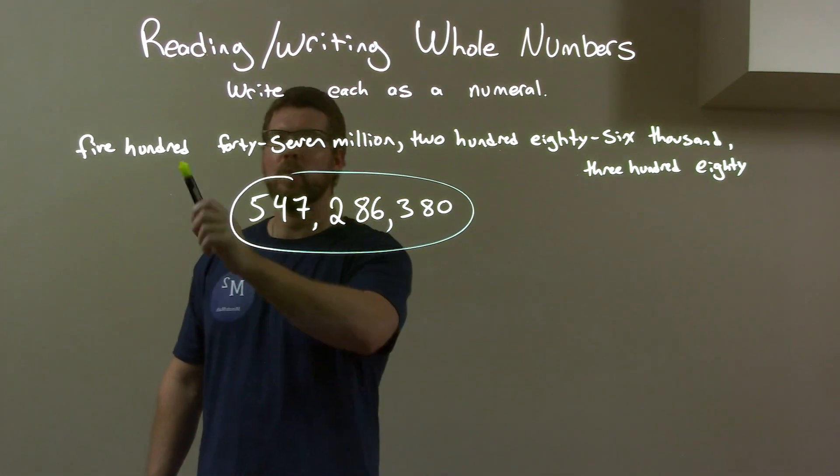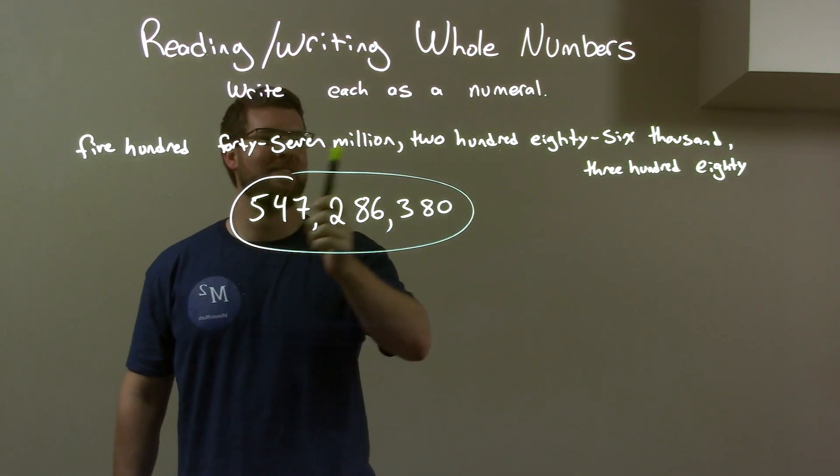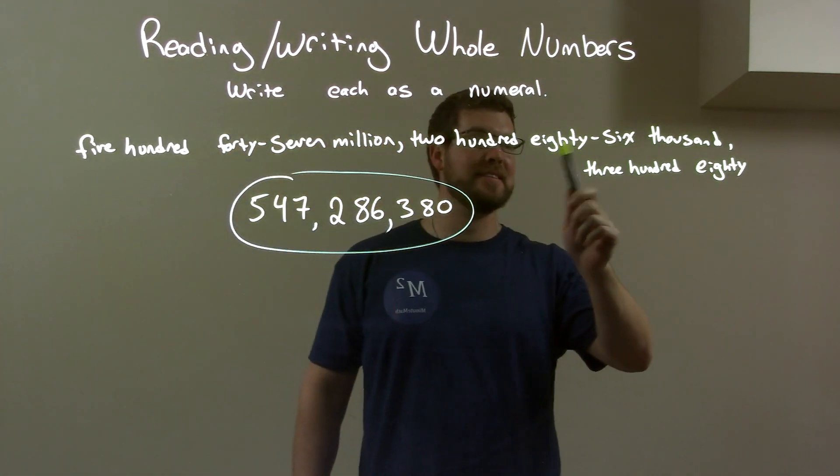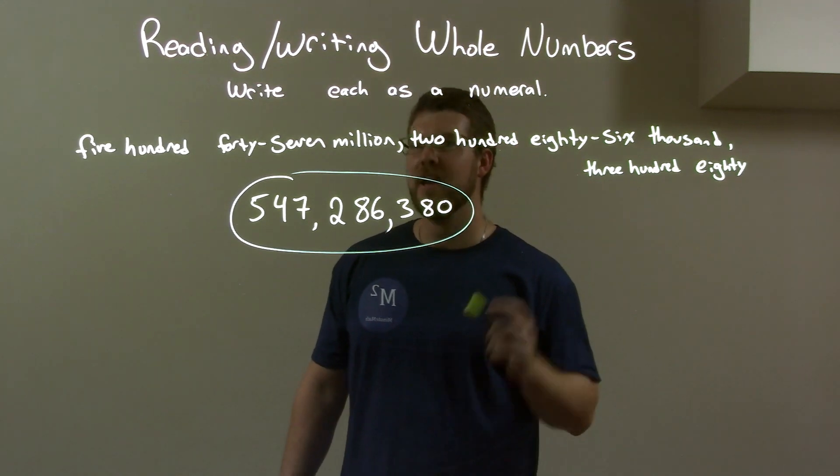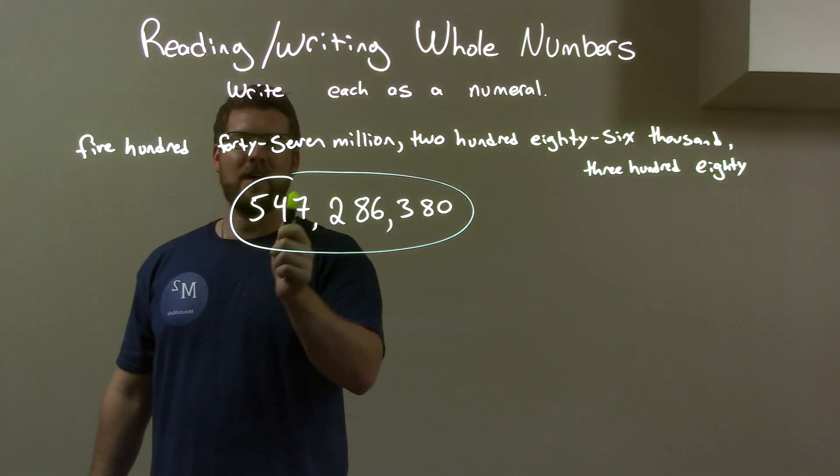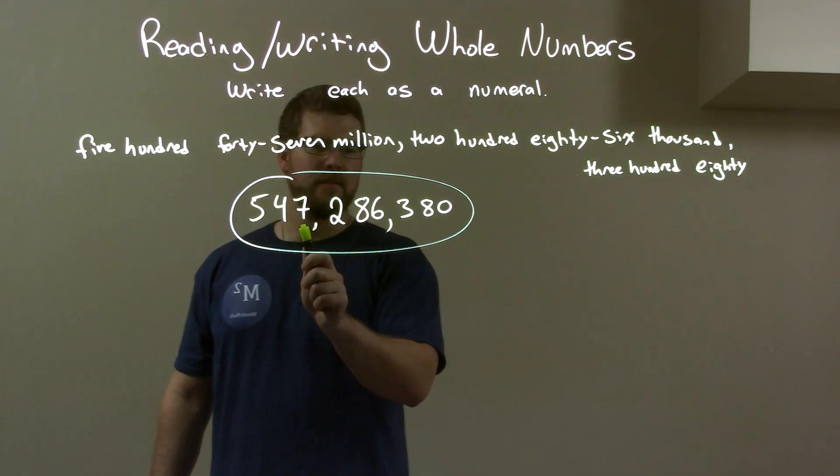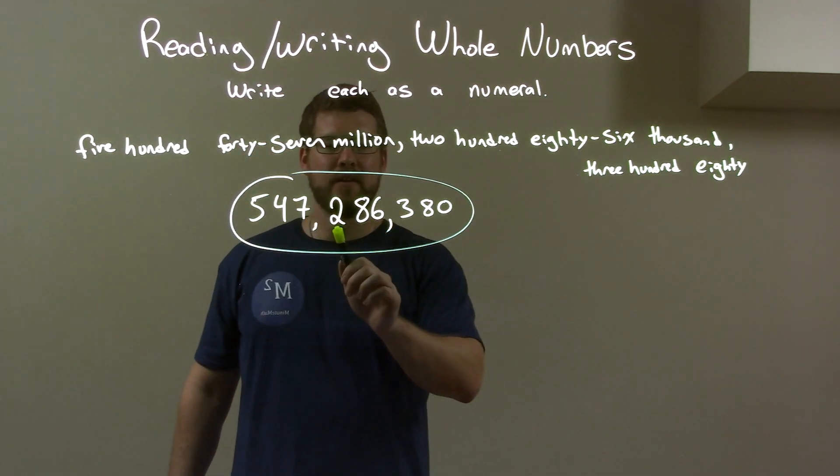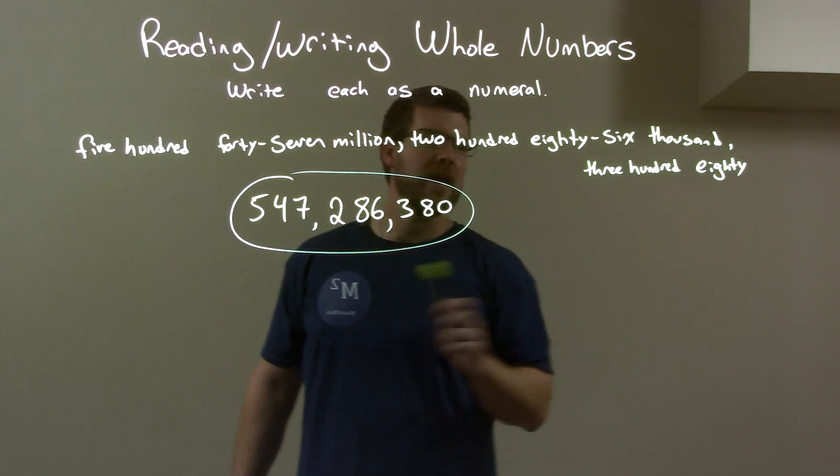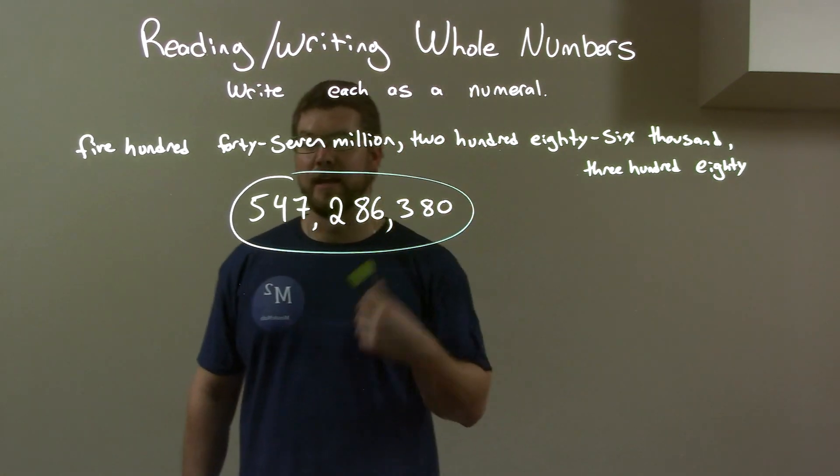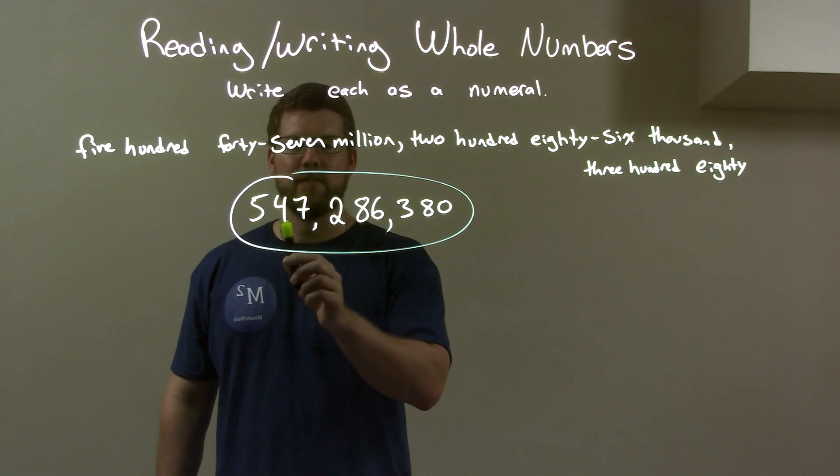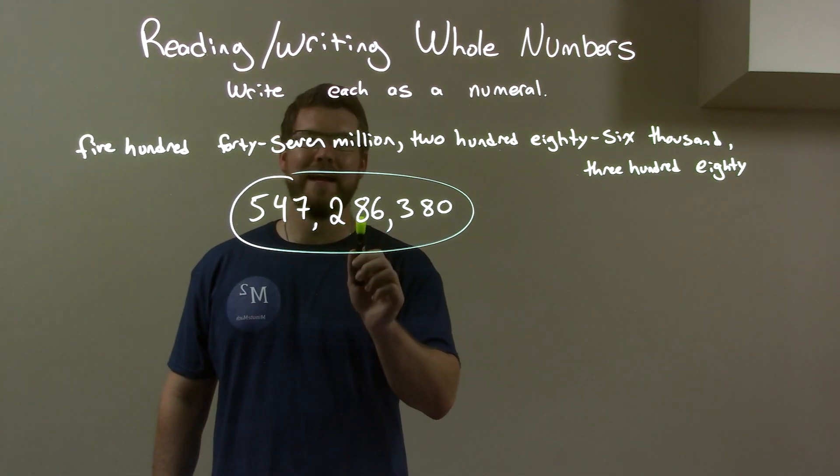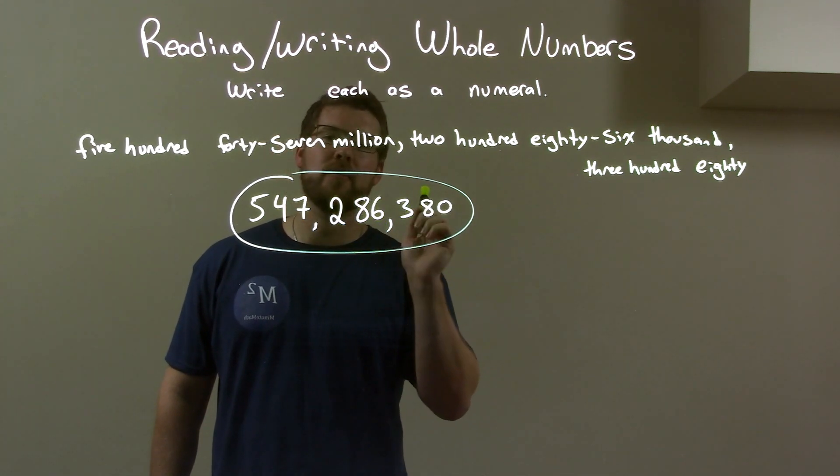So quick recap. We want to find five hundred forty-seven million, two hundred eighty-six thousand, three hundred eighty, and write that as a numeral. We write five hundred forty-seven first, but that's in the millions, so six places afterwards. Then two hundred eighty-six thousand. Two hundred eighty-six in the thousands. And three hundred eighty. So that gives us five hundred forty-seven million, two hundred eighty-six thousand, three hundred eighty.